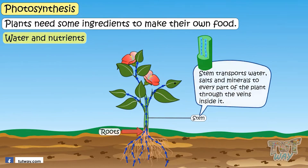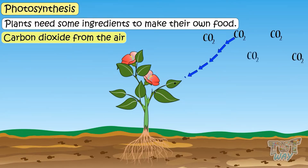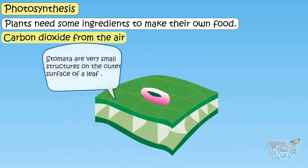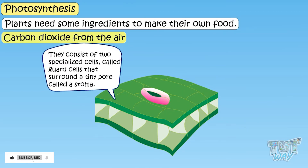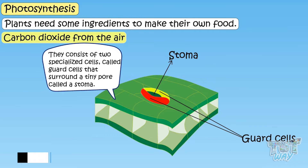Next is carbon dioxide. Leaves get carbon dioxide from the surrounding air, and it enters the leaves through small openings in leaves called stoma or stomata. Stomata are very small structures on the outer surface of a leaf. They consist of two specialized cells called guard cells that surround a tiny pore called a stoma.